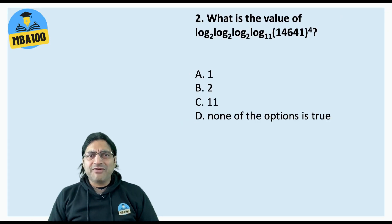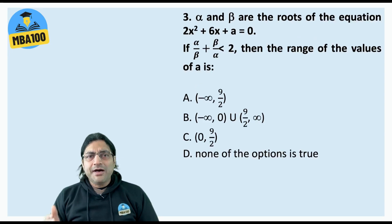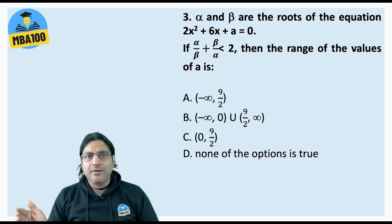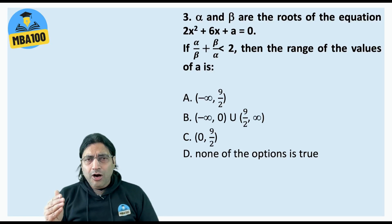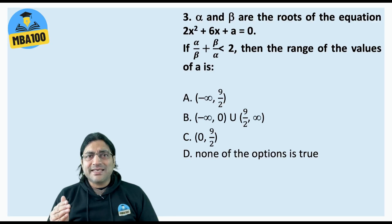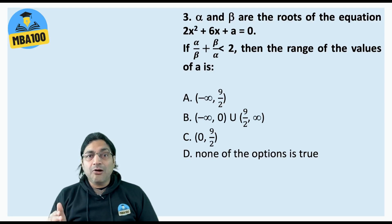Here almost everyone got it right and the answer is A. Now here in question number 3, the options were given in the examination in a different form because we have reproduced these questions when the reports of discrepancies started pouring in. We have probably put the options in a different form, but the answer was that the value of A is either negative or is greater than or equal to 9/2. Option B captures it the best.